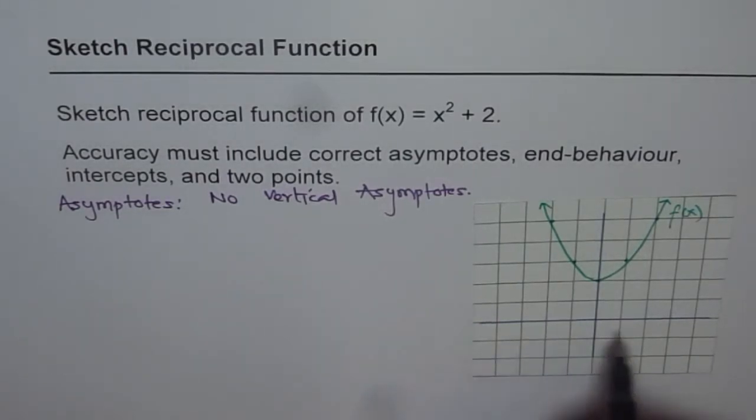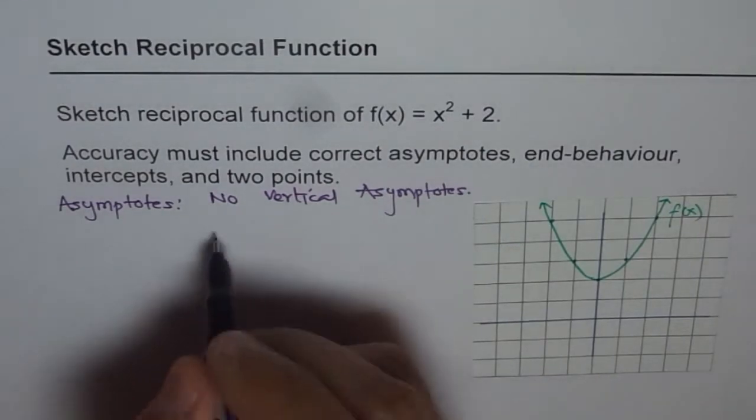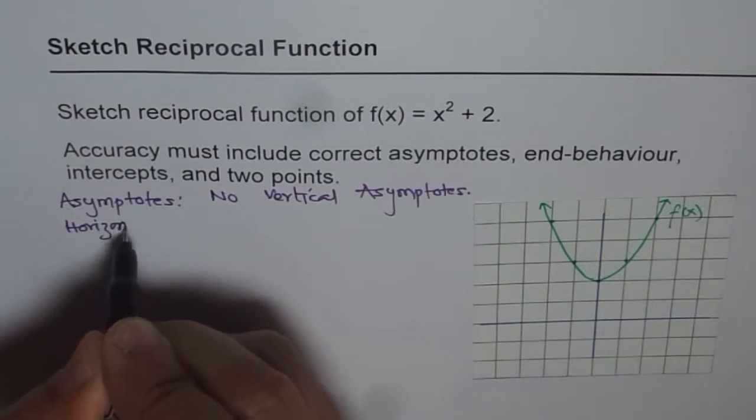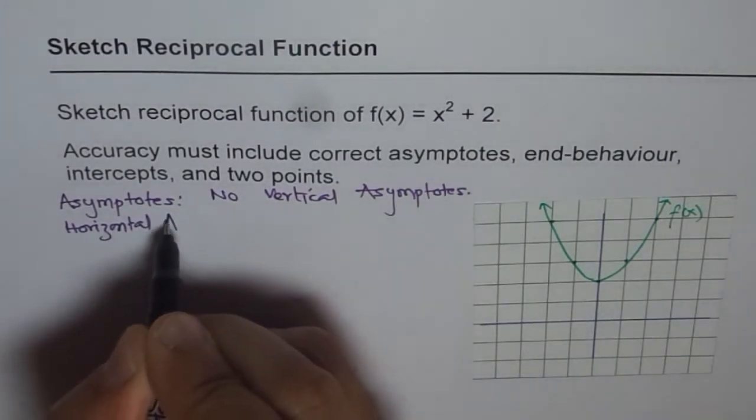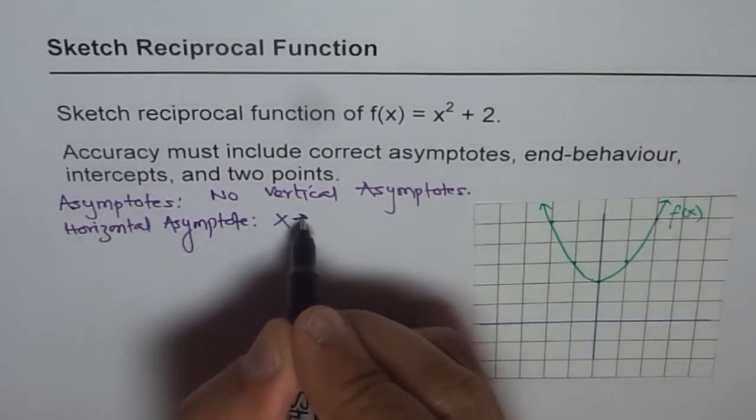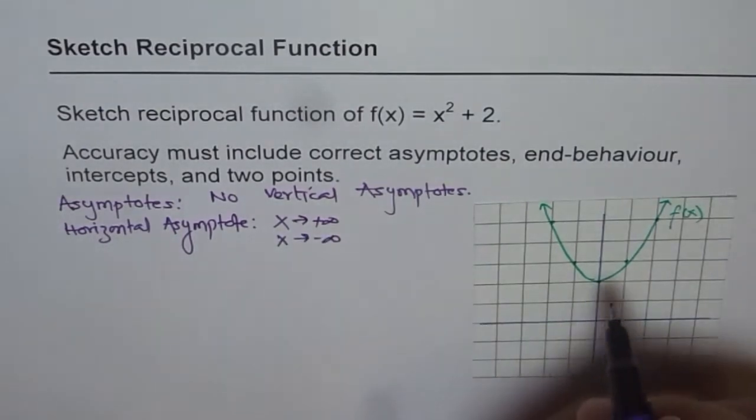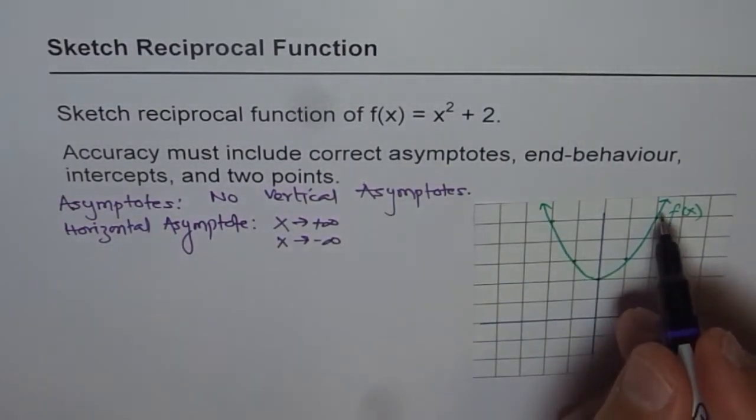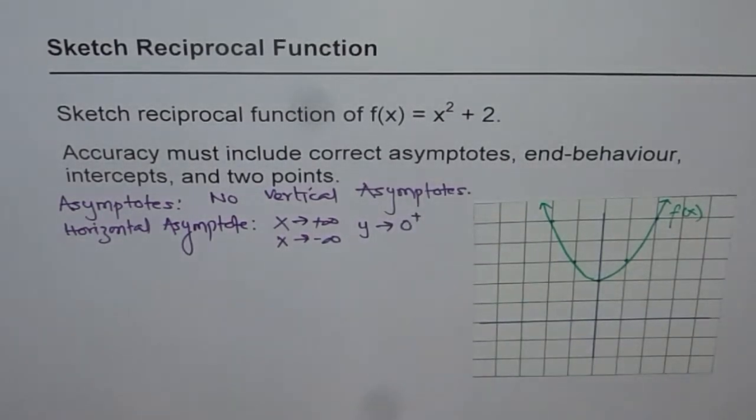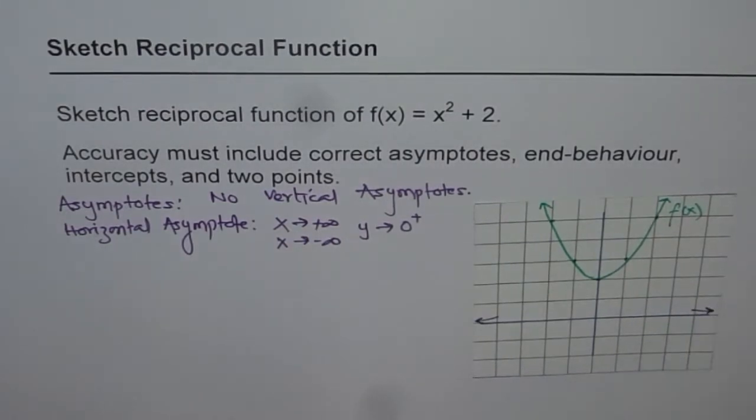Now how about horizontal asymptotes? Yes, there will be. As far as the horizontal asymptote is concerned, as x approaches positive infinity or as x approaches negative infinity, since the function is increasing and positive, y approaches zero and that too from the positive side. So the function approaches zero from the positive side. That is the behavior.